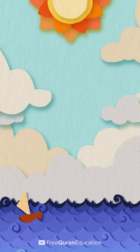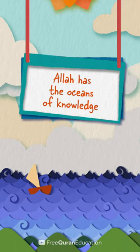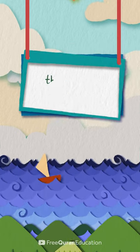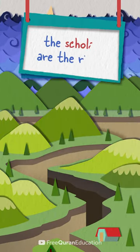Ibn Ashur says something really beautiful. He says that Allah has the oceans of knowledge, and the prophets are the valleys, and the scholars are the rivers.